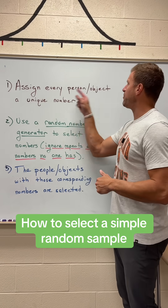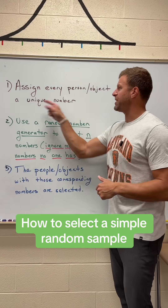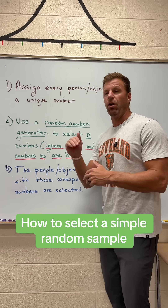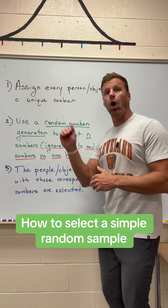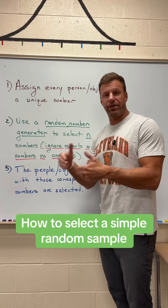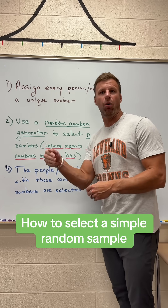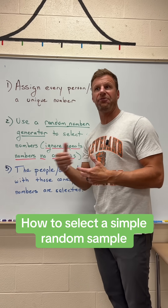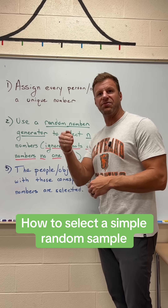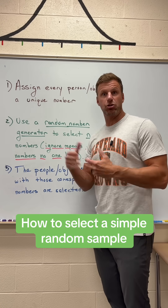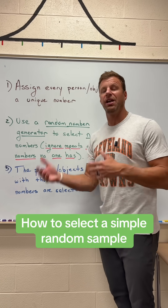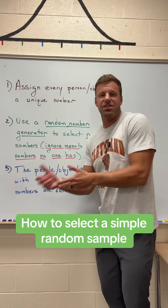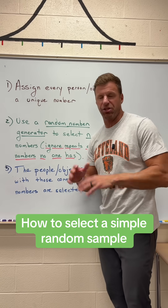Step one: assign every person or object a unique number. Make sure every person gets a number. Here's the deal — if you have over ten people, whoever gets number one has to have 01. If you have over a hundred people, whoever gets number five has to have 005. So if you have triple digits, everybody needs a triple digit. Double digits, everybody has a double digit. You get the idea.